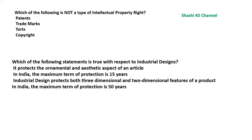Question 18: Which of the following is not a type of intellectual property right? Options: patents, trademarks, touts, copyright. The answer is touts — patents, trademarks, and copyright are all types of intellectual property rights.